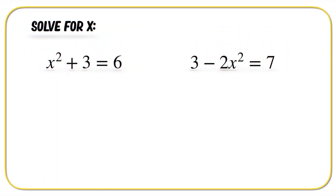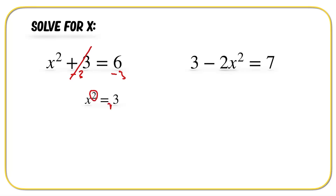Let's do a few examples to see what this looks like. We're going to solve x squared plus three is equal to six. If we subtract three from both sides, we end up getting x squared is equal to three, because this cancels out. And then to get rid of the square, we square root the opposite side, so x is equal to plus or minus the square root of three.